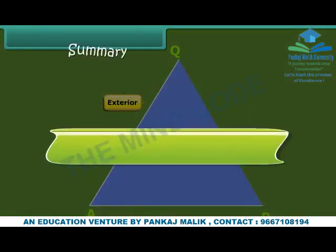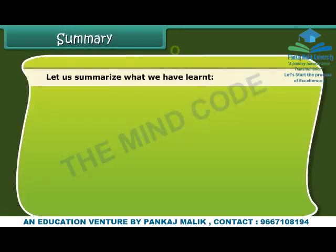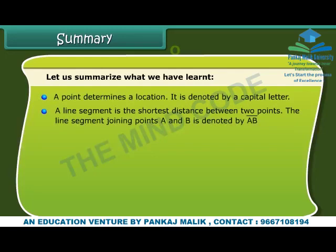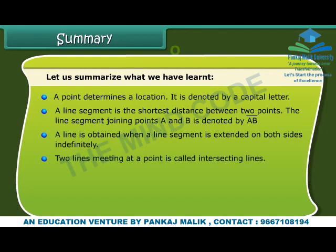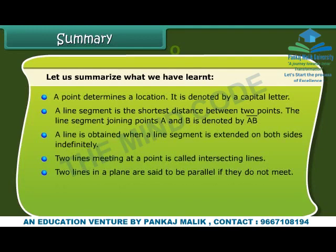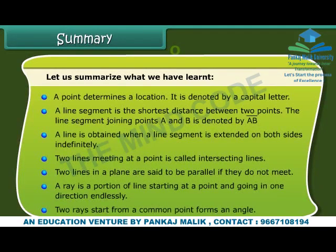Let us summarise what we have learnt. A point determines a location and is denoted by a capital letter. A line segment is the shortest distance between two points, denoted by AB. A line is obtained when a line segment is extended on both sides indefinitely. Two lines meeting at a point are called intersecting lines. Two lines in a plane are parallel if they do not meet. A ray is a portion of a line starting at a point and going in one direction endlessly. Two rays starting from a common point form an angle.